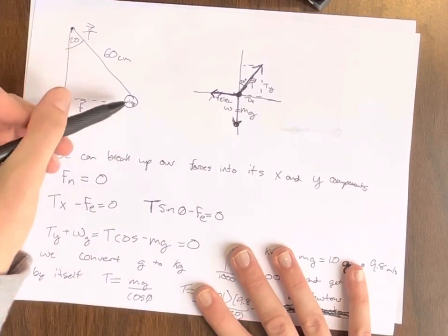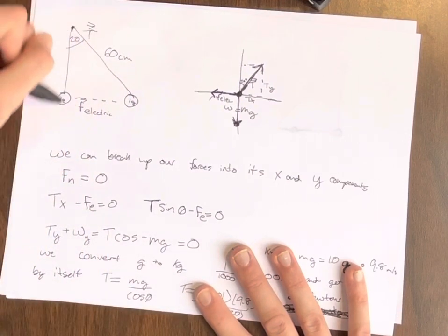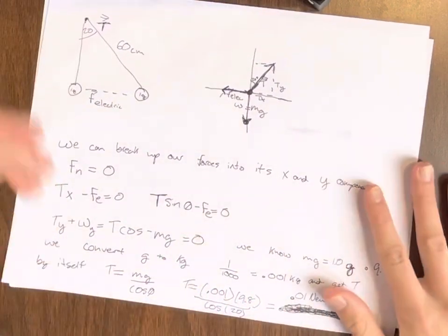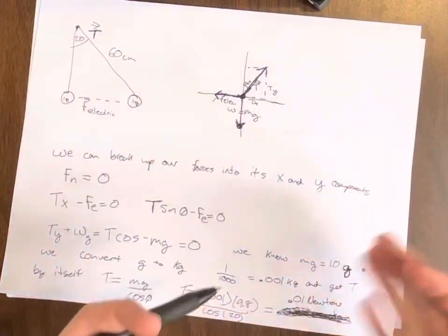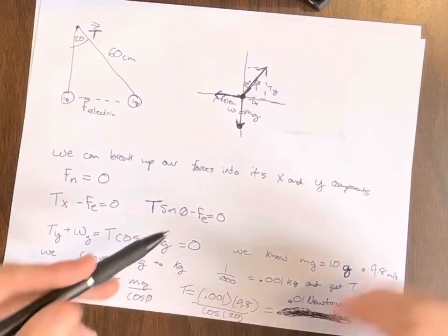And our tension is going to be the string. So we can say our tangent of this triangle is T-electric. Now, to make it easier, we can put it on an X- and Y-axis to help us show where all our directions of our forces are acting.